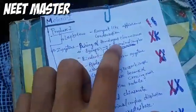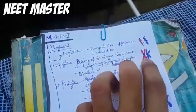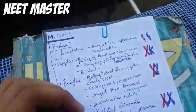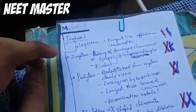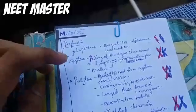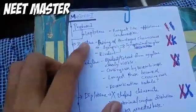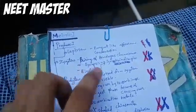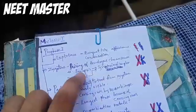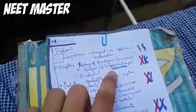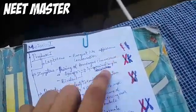In Zygotene, there is pairing of homologous chromosomes. All of these are homologous chromosomes — you receive homologous chromosomes from each of your parents. Then pairing of homologous chromosomes occurs through synapsis. Here it is synapsis via the synaptonemal complex.